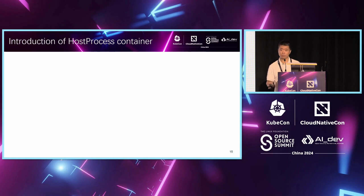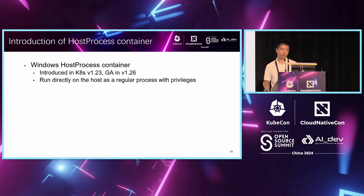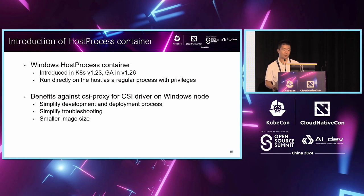Next, I will introduce the host process container. Starting from Kubernetes 1.23, the host process container feature was introduced, and this feature went GA in 1.26. For the host process container on Windows, it can run directly on the host just as a regular process, which provides it with the necessary privileges.